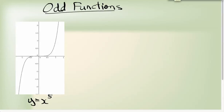Here we have an example of an odd function. Now an odd function has what we call rotational symmetry. If I rotate it around the origin, rotate it 180 degrees, we end up with the exact same line. Let's take a look at what that looks like.